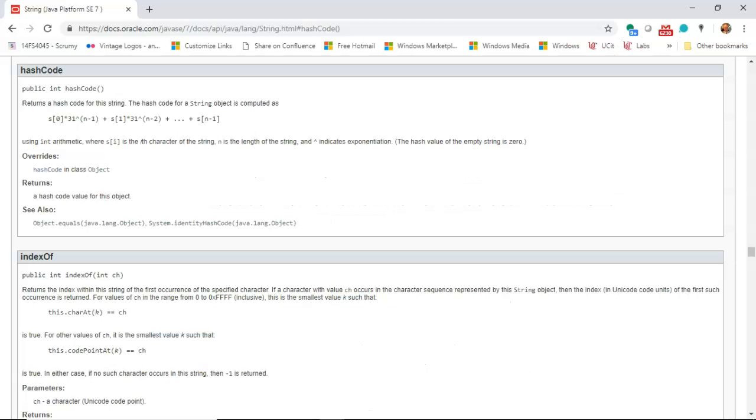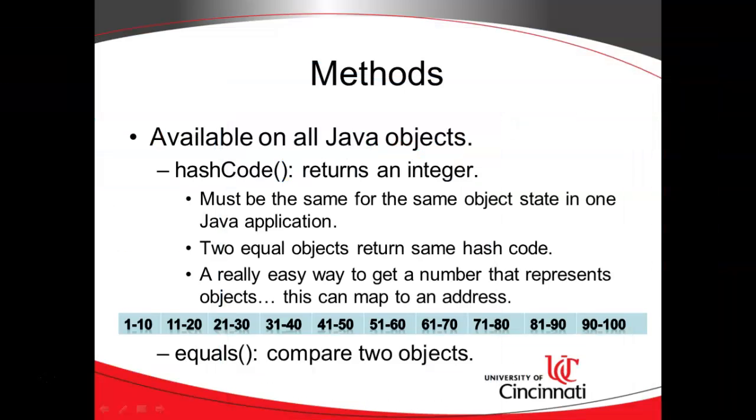One of my favorite real life examples of this is the hash code method that is overridden on the class called string. It takes the first character, multiplies it by 31, which happens to be a prime number to the power of the length of the string minus one for the first character, length of the string minus two for the second, and so on and so forth. A fairly complicated formula, but it's a really good formula to get a hash code for a string.